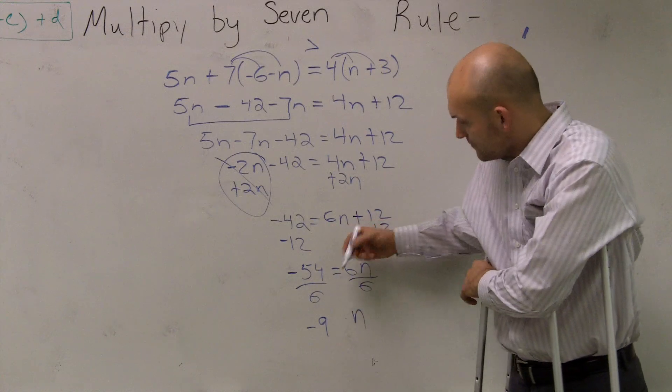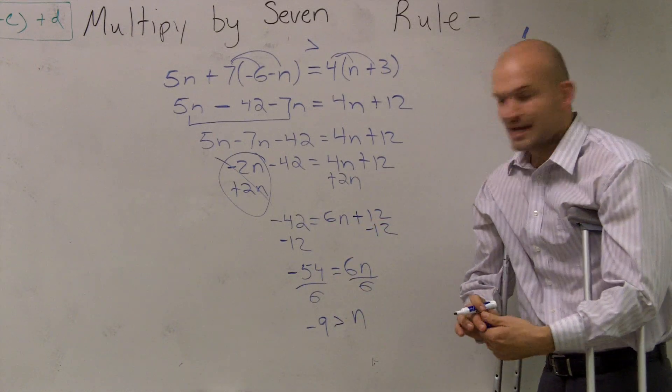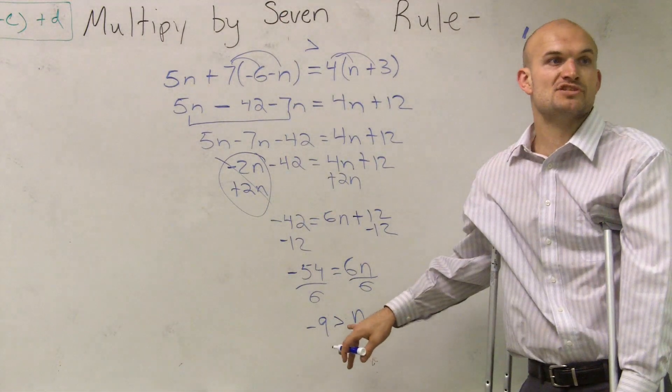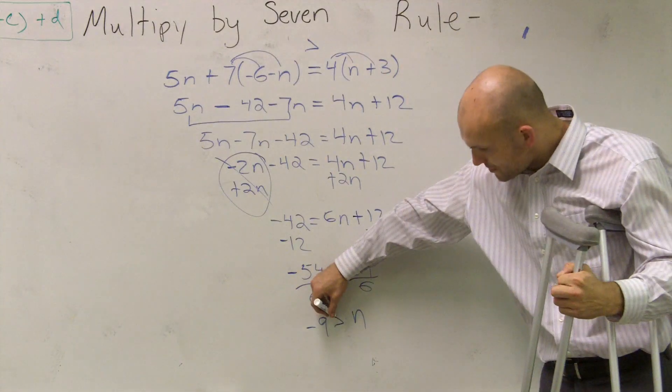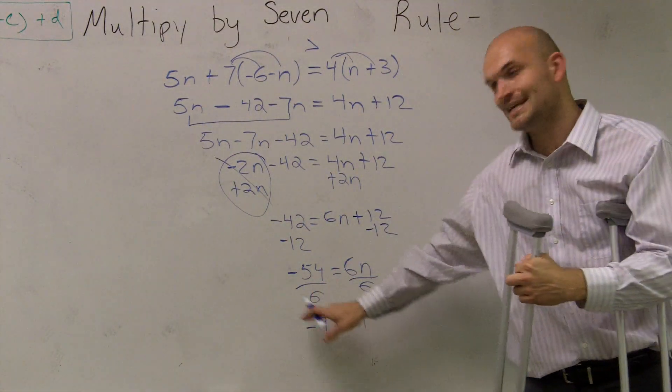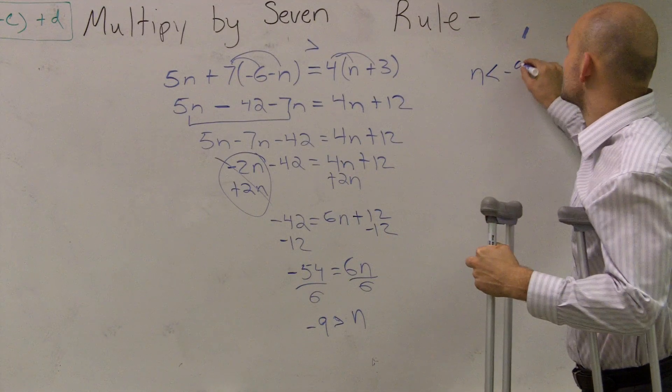So then I put my sign back in. So I have N is less than negative 9. Alright? I usually don't like graphing this because it can get confusing when I have my variable on the right side. So what I'm going to do is I'm going to remember that my inequality sign, the little alligator mouth, is eating the number. So I'm going to rewrite it with my variable to the left.